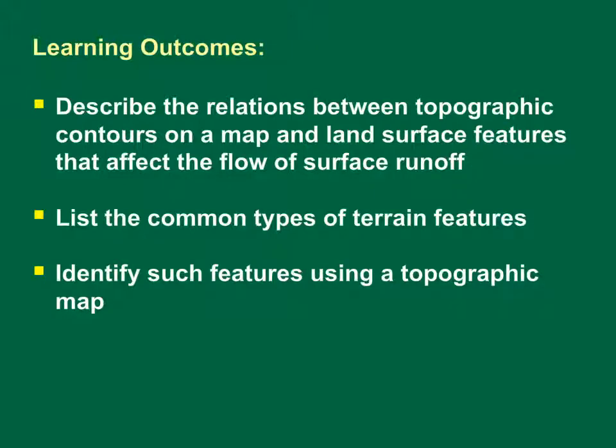In this training module, we saw how different topographic contour patterns correspond to features on the land surface. By drawing flow lines perpendicular to contour lines, we saw how topographic features can be used to delineate watershed divides. We examined the characteristics of a hill, a ridge, a spur, a cliff, a saddle, a draw, a depression, and cut and fill sections, and discussed potential effects of each on flow patterns. The contour patterns and associated sketches should help you identify landforms on a map.